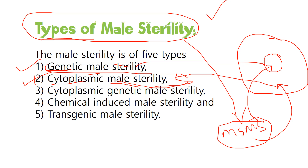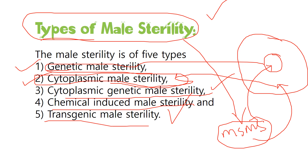The third type is a combination — cytoplasmic as well as genetic male sterility — where the recessive gene is present either inside the nucleus or in the cytoplasm. The fourth type is chemically induced male sterility, where sterility is induced by applying chemicals. The fifth is transgenic male sterility, which is a different topic and will be discussed in upcoming lectures.